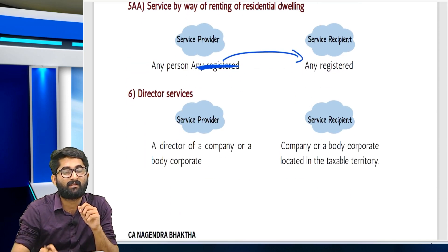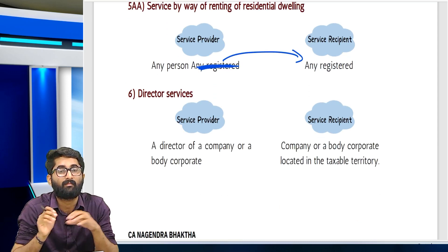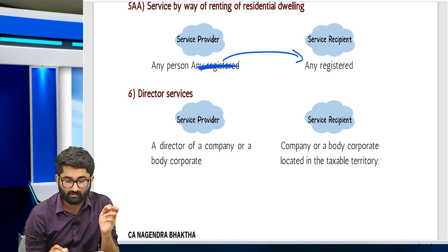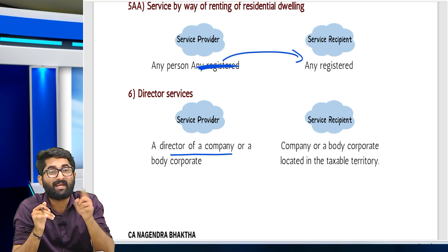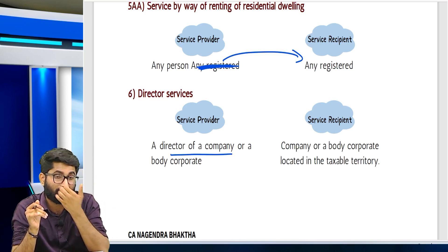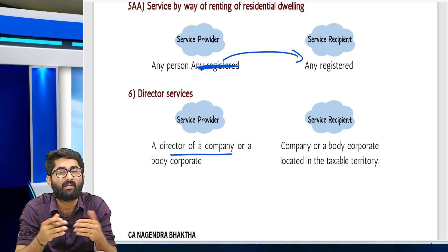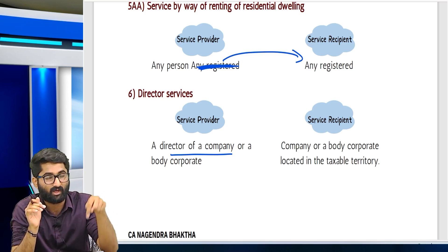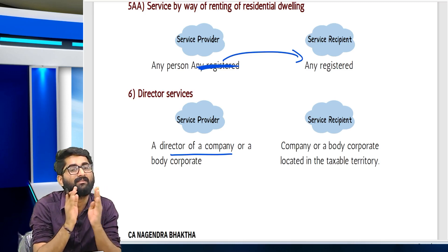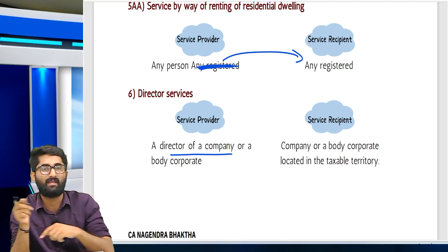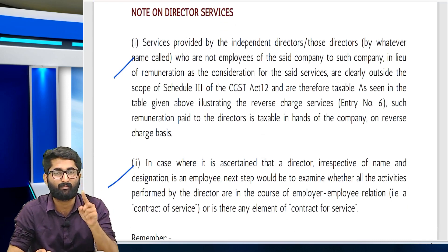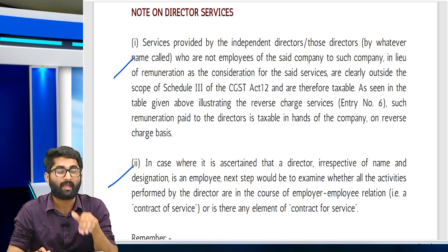Director services — there was one amendment: a director of a company or body corporate giving director-related services to a company or body corporate — the company will pay under RCM. Note: only director-related services qualify. If the director gives other services such as renting of immovable property to the company, that is FCM, not RCM. Also, if the director is considered an employee, it is neither supply of goods nor supply of service — no RCM, no FCM. If director is not an employee, then it is RCM.